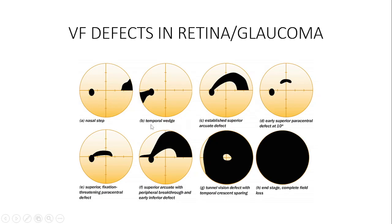Look at this picture — the visual field defect does not respect the horizontal meridian, and this one doesn't respect neither the horizontal nor the vertical; it moves across. These patterns are typical of retinal problems where the ganglion cells are found, and are typical in glaucoma. In glaucoma, the visual field defect does not respect neither the vertical nor the horizontal meridian.